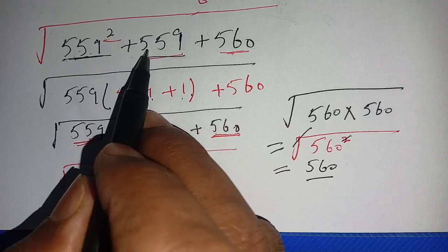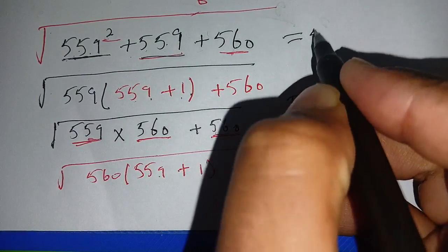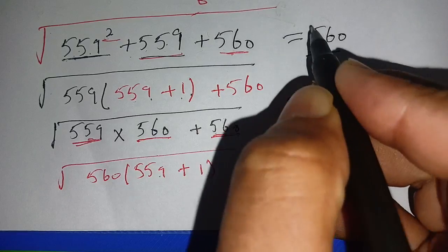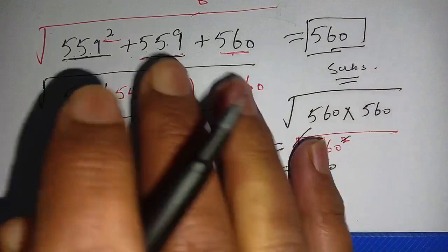We solved this without using any calculator. Thus, square root of 559 squared plus 559 plus 560 is equal to 560, which is today's problem. If you are new here, you can subscribe to the channel for more informational videos. See you in the next video, bye.